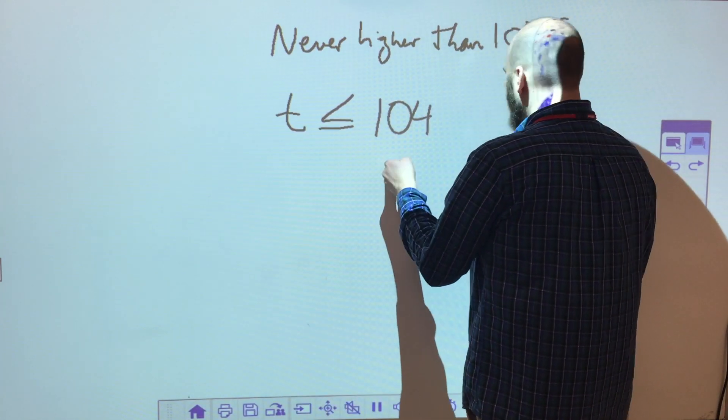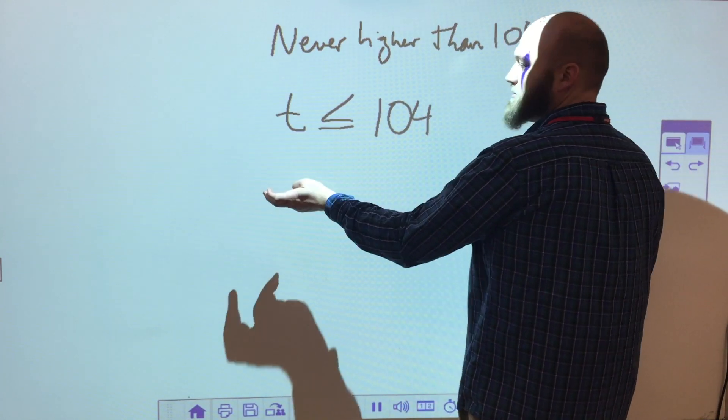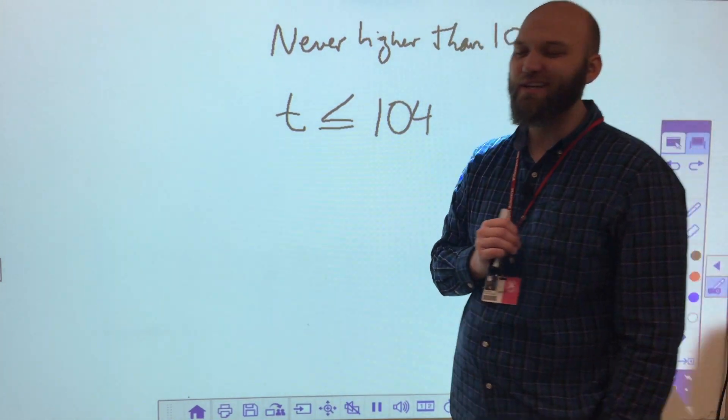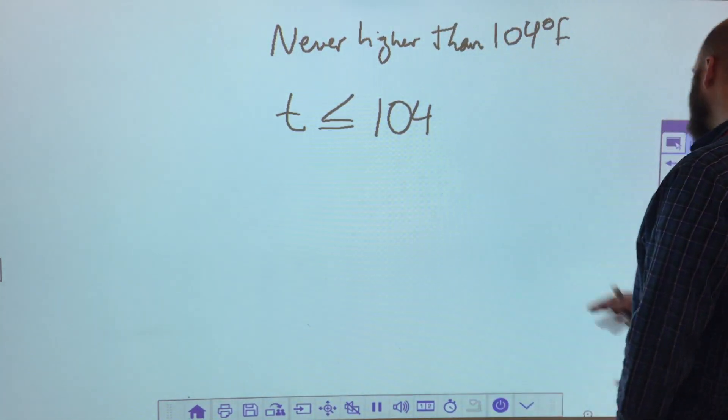So T is going to be less than or equal to 104. That means I can be 104, I can be 103.9, I can be 23 degrees Fahrenheit. Hopefully not, but it's possible. So let's take a look at what that looks like in your book.